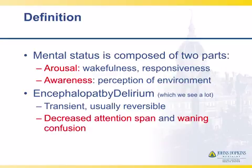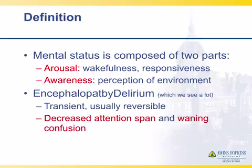Encephalopathy, or delirium, is usually transient and reversible, and is typified by decreased attention span and waxing and waning confusion. People who are encephalopathic have poor attention. When you do your mental status exam, they may name, repeat, and comprehend fairly well, but concentration tasks are poor. An example is doing the days of the week forward and then backwards — they'll often get held up on Wednesday. For mild encephalopathy, you may find problems with the months of the year. Spelling 'world' backwards is also a concentration task, which is primarily affected in encephalopathy.